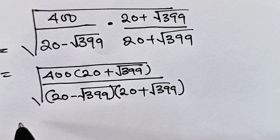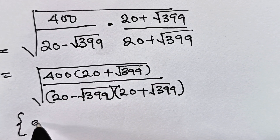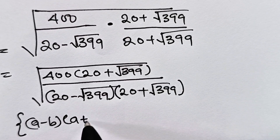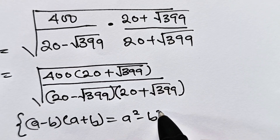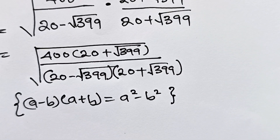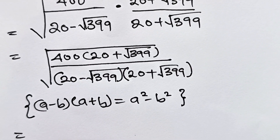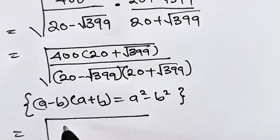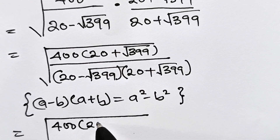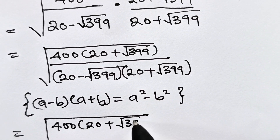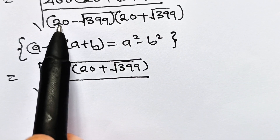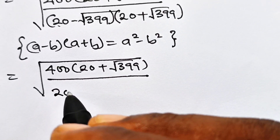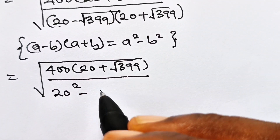Let us recall that A minus B multiplied by A plus B is equal to A squared minus B squared. Therefore, this is equal to the square root of 400 multiplied by 20 plus root 399, divided by 20 squared minus root 399 squared.